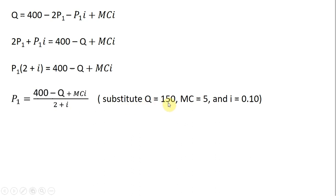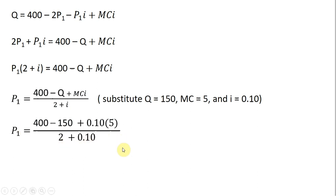Now we substitute the given values: Q is 150, MC is 5, and I equals 0.1 — all numbers given at the beginning of this problem. Making those substitutions and simplifying, the price per unit of coal in year 1 is a little under $120, approximately $119.29.